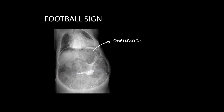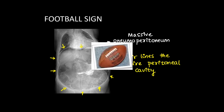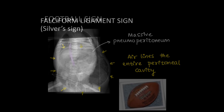In cases of large or massive pneumoperitoneum, we can see free air lining the entire peritoneum and the abdomen looks like a football, hence it is known as the football sign. This is seen in cases of massive pneumoperitoneum.